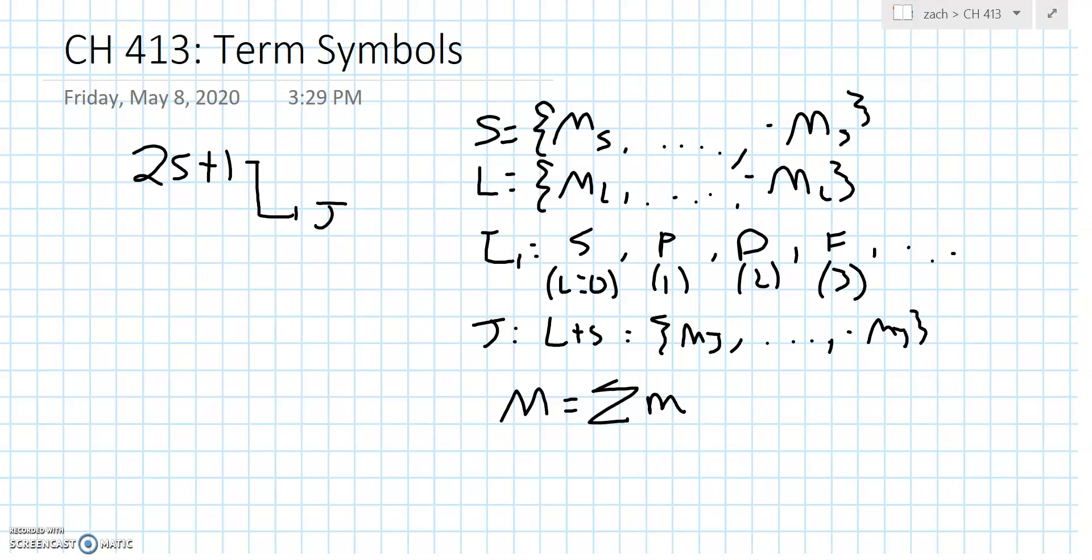I think what's best for this is just to hop right into an example. First, when we talk about the number of states, the microstates, is W. And that's equal, if we had M spin slots and N electrons, to M choose N, where M is the number of slots and N is the number of electrons.